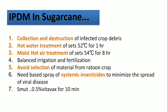For viral diseases, to control the vector go for need-based spray of systemic insecticides like methyl demeton, imidacloprid, etc. For controlling smut disease, dip the setts for around 10 minutes in a 0.5% Vitavax solution concentration.